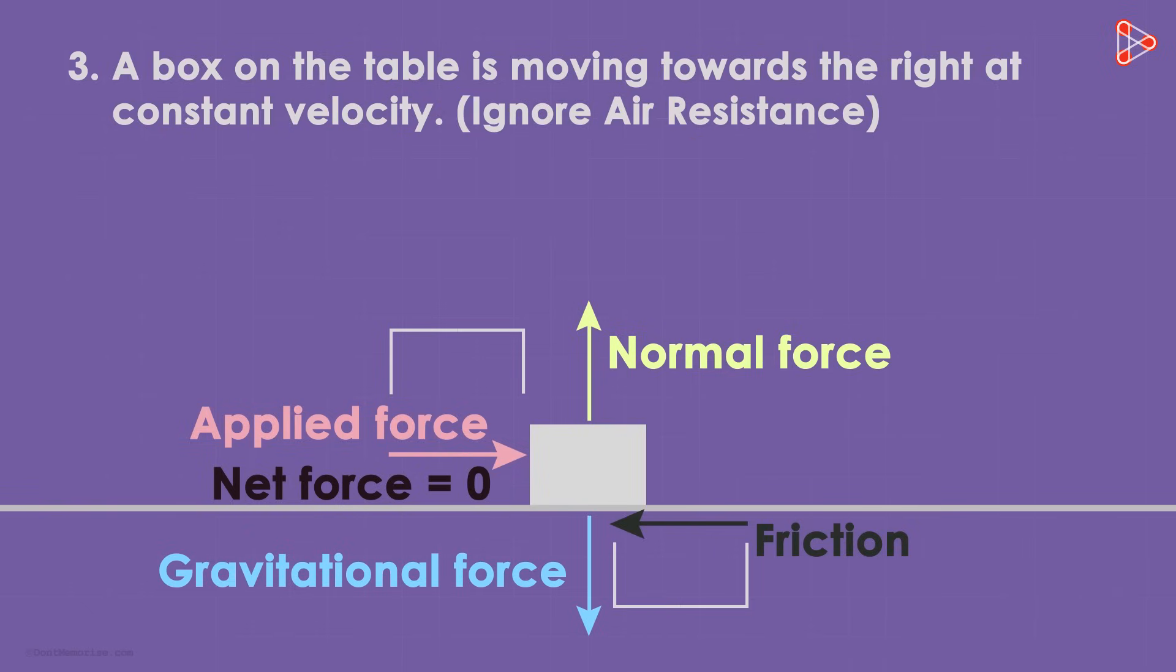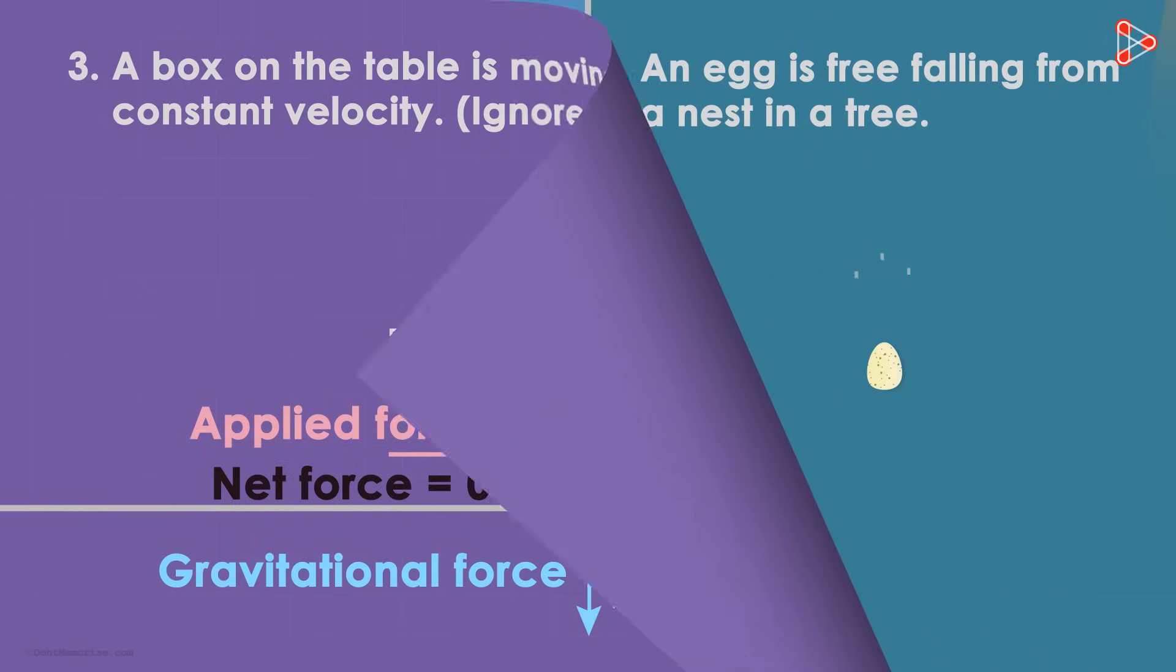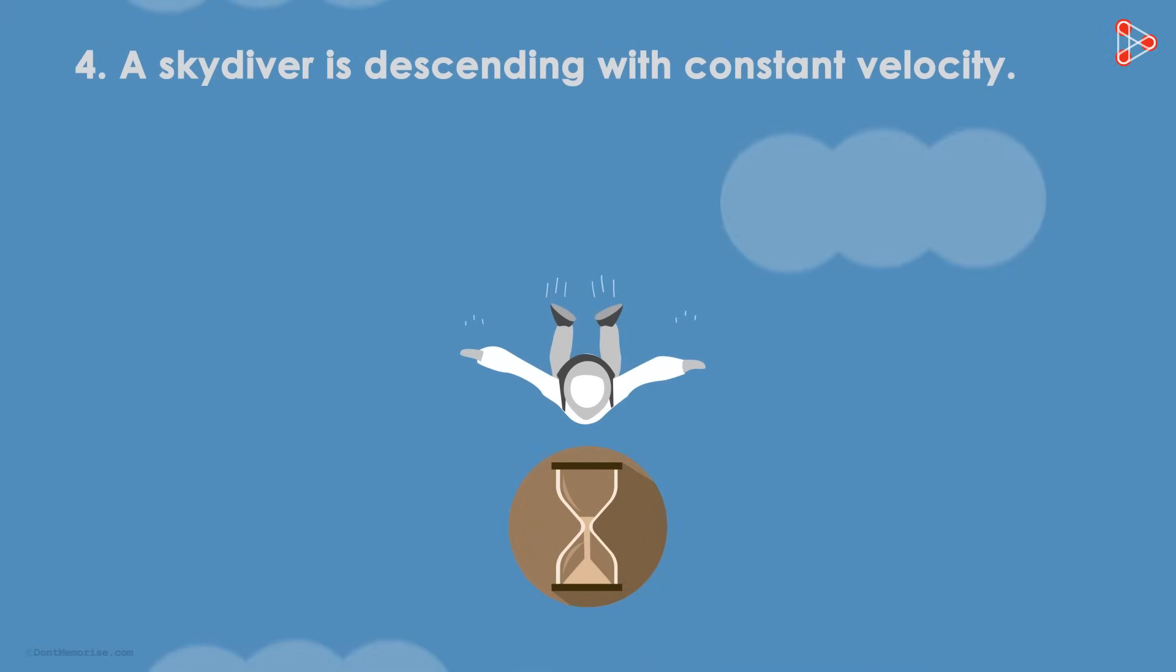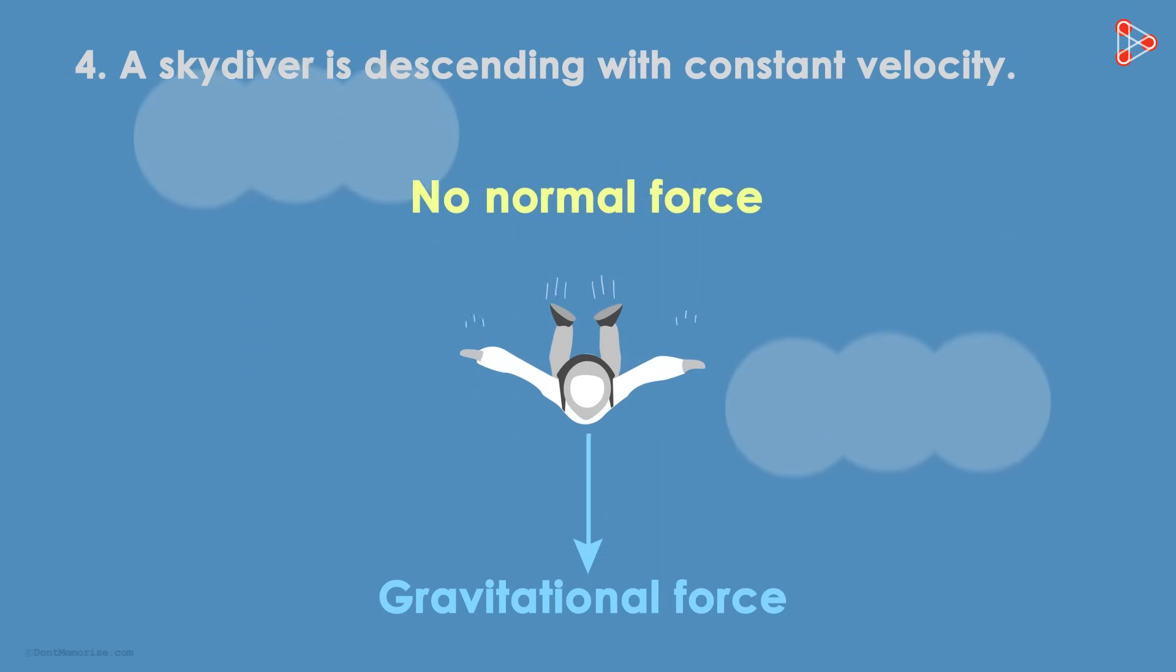Now would you like to try drawing the free body diagrams for the fourth and the fifth situations? In the fourth case, let us first discuss the forces that are acting on the skydiver. There will be the force of gravity which is pulling the skydiver down. As there is no table or ground, the normal force will not exist.